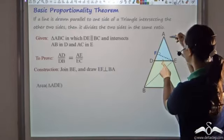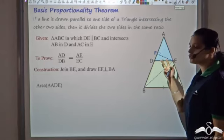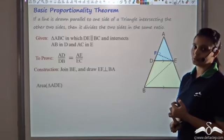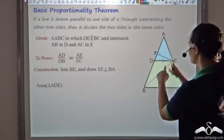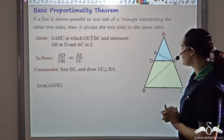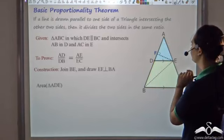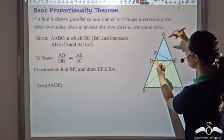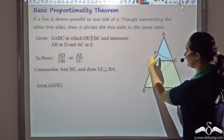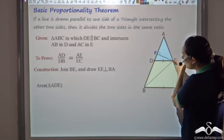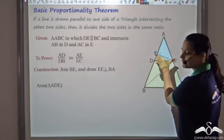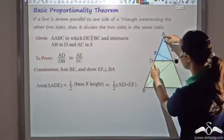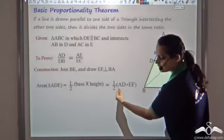Now observe triangle ADE. To find the area of this blue shaded triangle, we use half times base times height. Taking AD as the base, the opposite vertex is E, and the perpendicular from E to AB is EF. So EF becomes the height. Therefore, area of triangle ADE equals half times AD times EF.